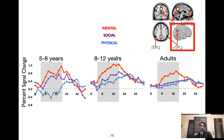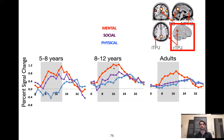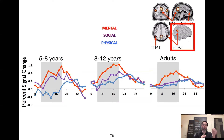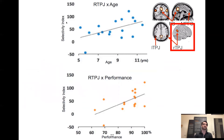However, in younger children — in 5- to 8-year-olds and 8- to 12-year-olds — the RTPJ is not nearly as selective. In 5- to 8-year-olds, the RTPJ has not yet figured out that its focus should be on mental stories rather than social stories. In 8- to 12-year-olds, it's starting to get a little bit selective. And by adulthood, it's the most selective. So you can actually see a change in neurodevelopment that really matches up with the behavioral development.